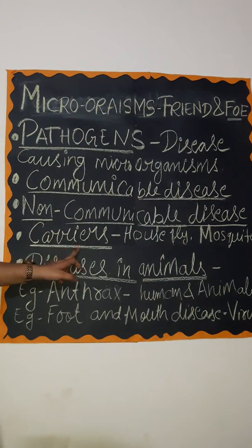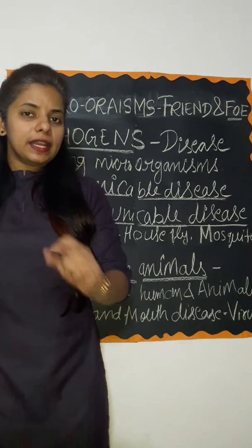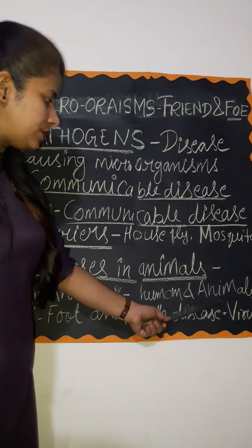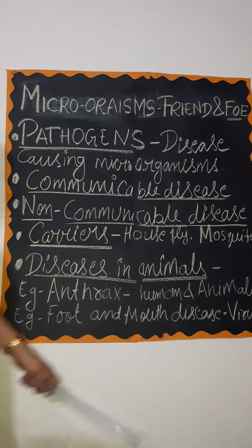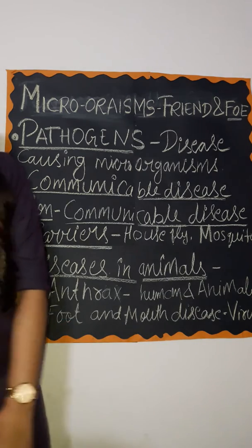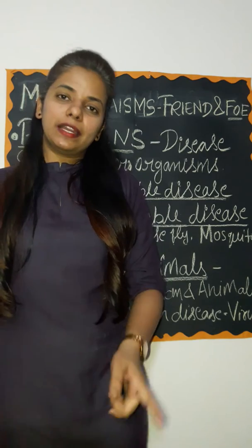So the main carriers are house fly and mosquito. These germs also cause diseases in animals, not only in humans. For example, anthrax is a very important bacterial disease caused in both humans and animals, and foot-and-mouth disease is an important viral disease caused in animals. Microorganisms are therefore very harmful, causing many health problems and diseases to both humans and animals.